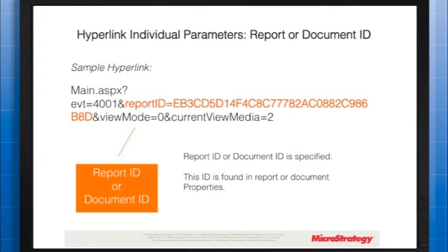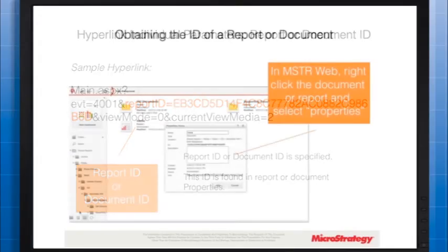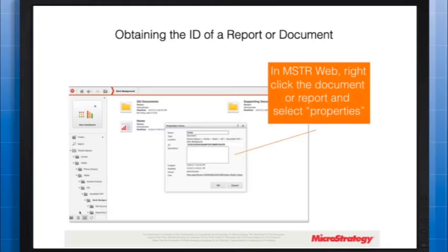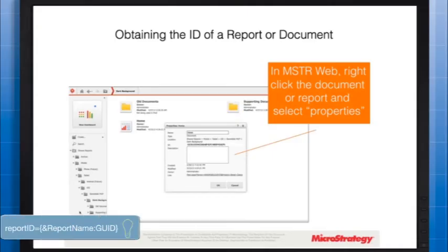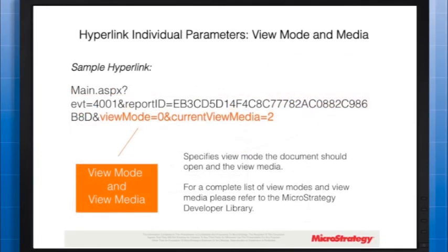These parameters should be used in conjunction with the appropriate report or document execution event IDs. To obtain the ID in MicroStrategy Desktop or Web, right-click a report or document and select Properties. The ID value in the Properties window represents the report or document ID needed for a URL. You can also use the right-click menu to copy the ID, or obtain it from the browser URL after executing the object in MicroStrategy Web. If the report is a dataset of the source document, you can use an auto-text code to retrieve the report ID at runtime.